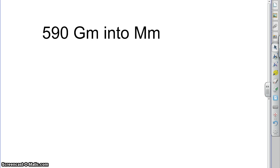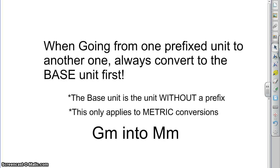What we're going to do, when moving from one prefixed unit to another, is always convert to the base unit first. The base unit is the one without a prefix. This applies only to metric conversions. It's kind of like with the type 1, type 2, type 3 naming of acids. A lot of times we learn a rule, then we realize it doesn't apply to a new situation. So first of all, make sure that you're dealing with metric units before getting into the details of all this.